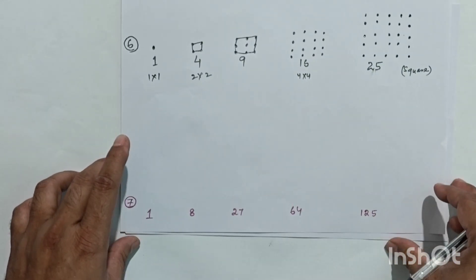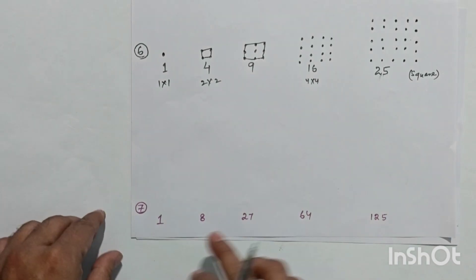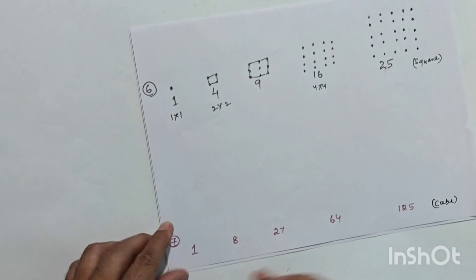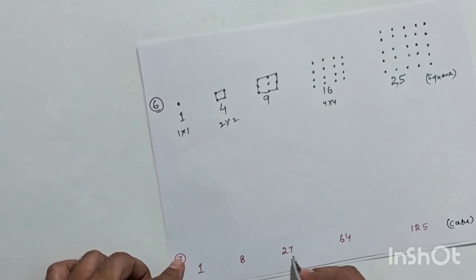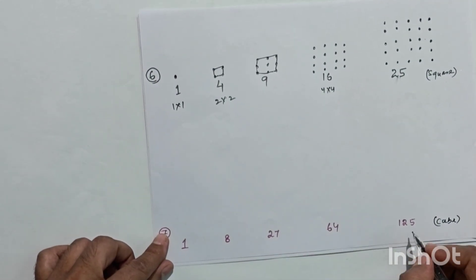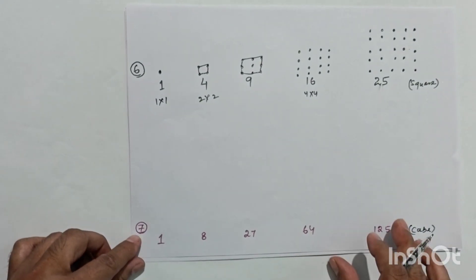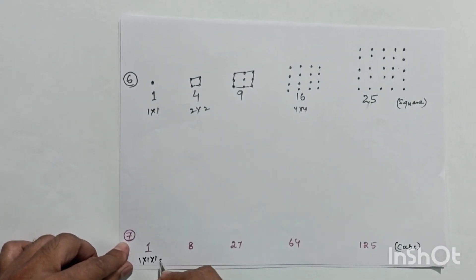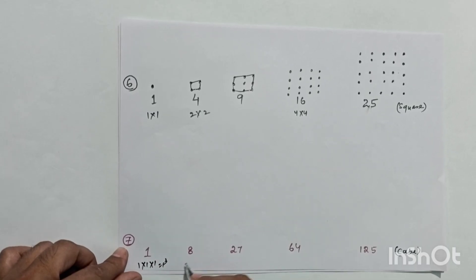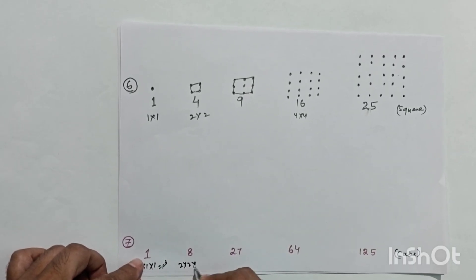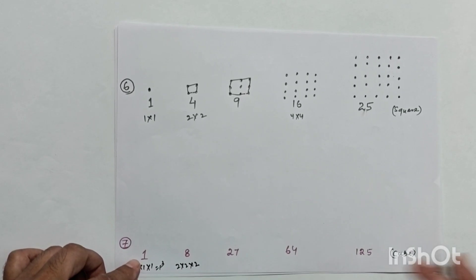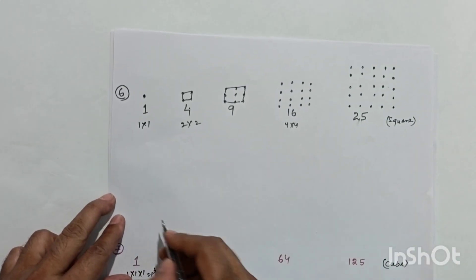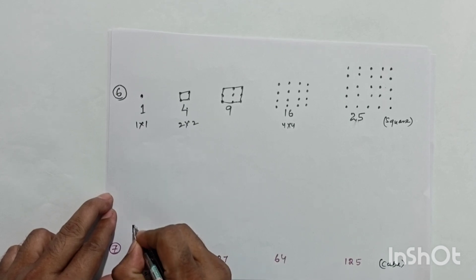The next series is the cube series: 1, 8, 27, 64, 125 — all are cube numbers. For example, 1 = 1×1×1, and 8 = 2×2×2. To visualize these we draw cubes instead of dot arrangements.